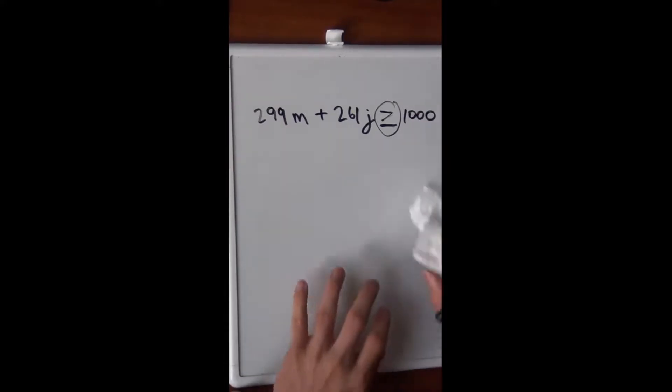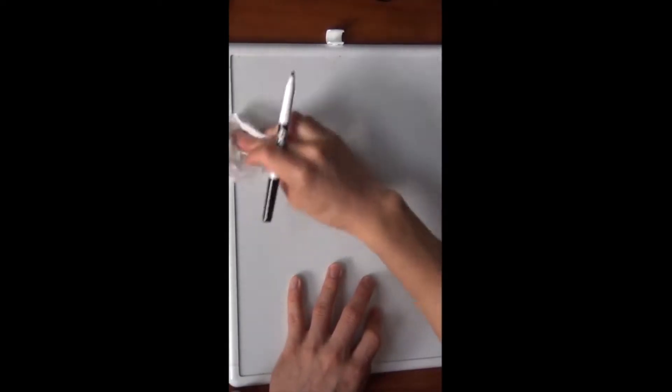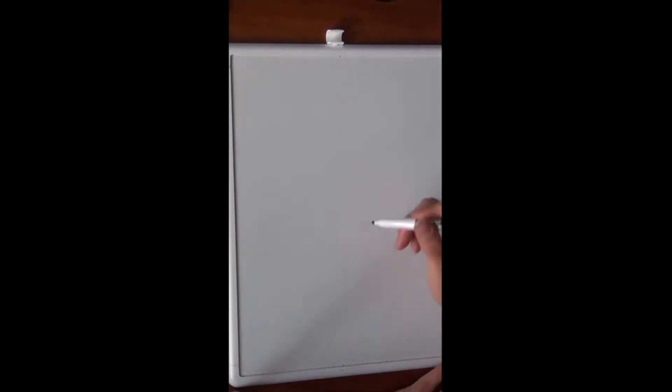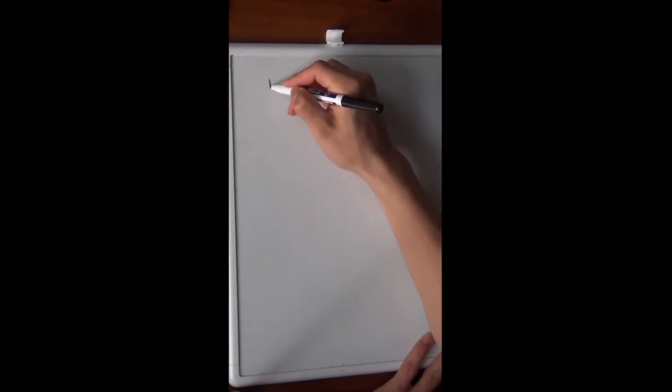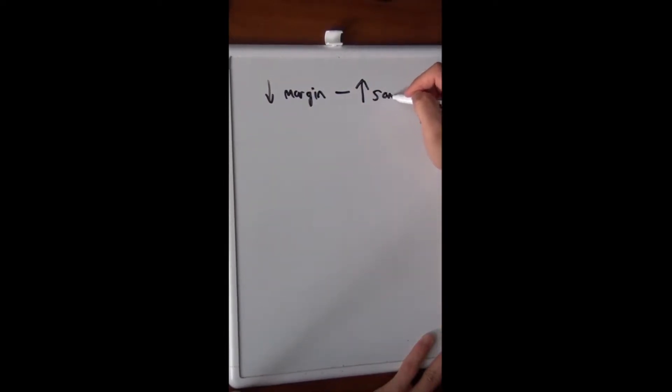Question two is about research methods. We need to try to decrease the margin of error for a study of psychology degree undergraduate students and the amount of time they read. So how do we decrease margin of error? Well, the easiest way to decrease the margin of error is to increase the sample size. So how do we increase the sample size from 75?